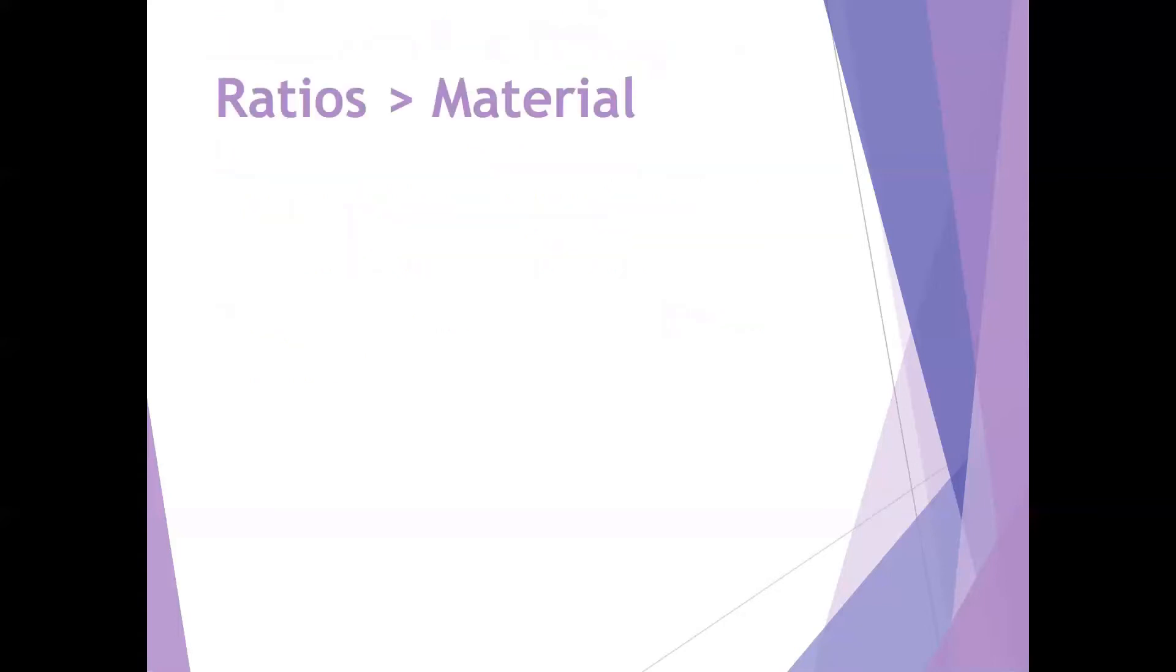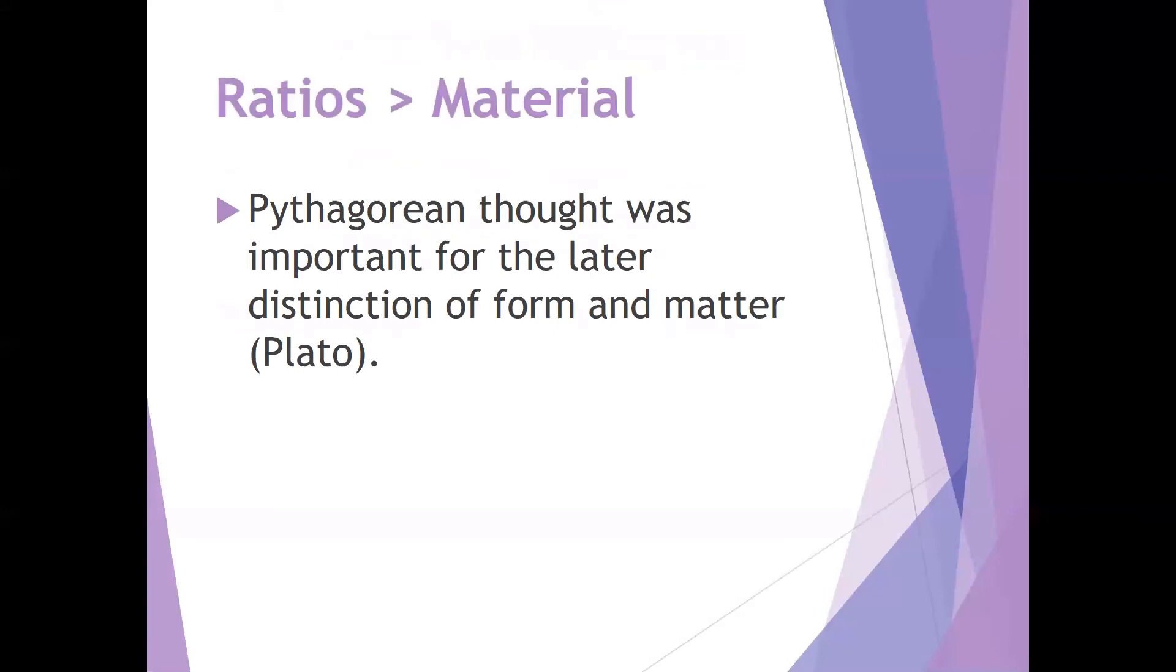The ratios then, the mathematical truths, are more important than the matter, as we talked about with the instruments. So Pythagorean thought was important for this later distinction between form and matter. So we see Plato making that distinction between the material realm and then the realm of the form. So we'll cover that more carefully as we move on to Plato.